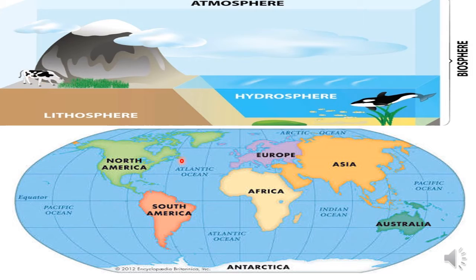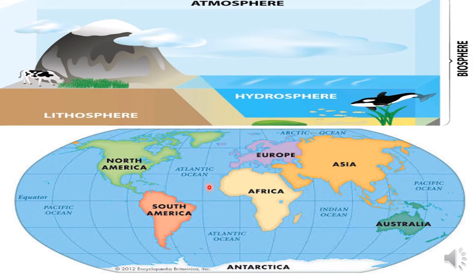Look at the map — wherever you see blue color, that is ocean. The land under those oceans is oceanic land. And wherever you see the continents — Africa, Europe, Asia, North America, South America — all that land area is continental lithosphere.